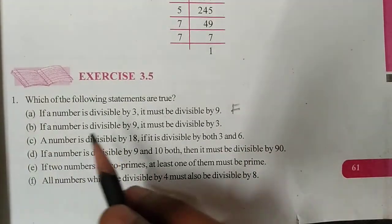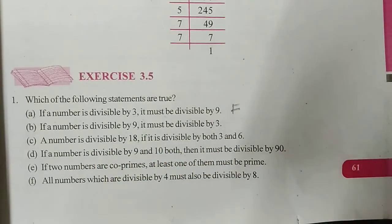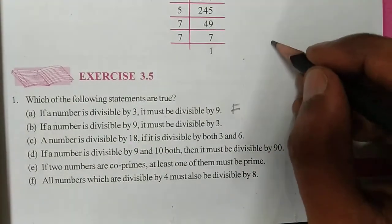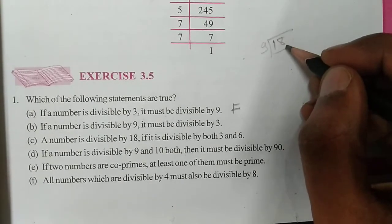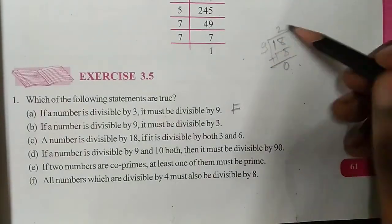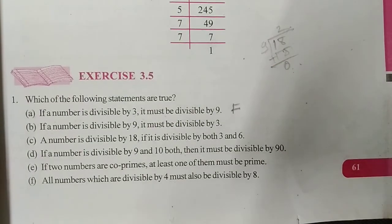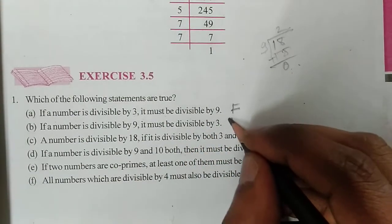After that, Question 1(b): If a number is divisible by 9, it must be divisible by 3. In general, suppose 18 — 18 is divisible by 9 (9 × 2 = 18), so it is divisible. And it is also divisible by 3. So students, write 'true' here.